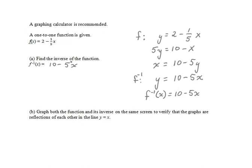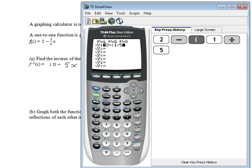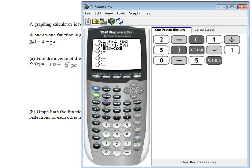So let's now graph these two using the graphing calculator. Here, y1 will be 2 minus parentheses, 1 divided by 5, parentheses, x. Use the down arrow to go down to y2 and enter 10 minus 5x.